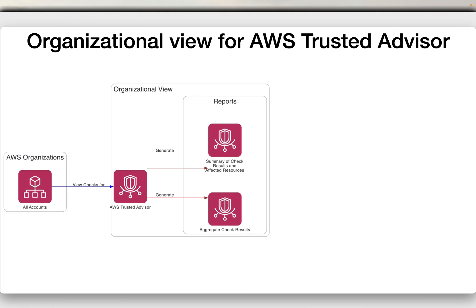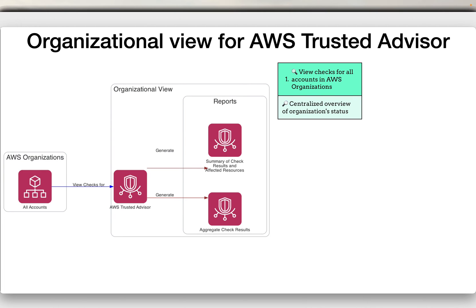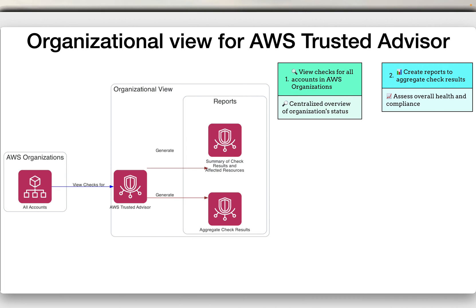Next is enabling organizational view for AWS Trusted Advisor. Trusted Advisor can work across an entire organization — not just a single account, but all multiple AWS accounts within a single AWS organization. Organizational view enables you to view Trusted Advisor checks for all accounts within your AWS Organizations, providing a centralized overview of the entire organization's status. You can generate reports that consolidate check results for all member accounts, making it easier to assess the overall health and compliance of your AWS environment.